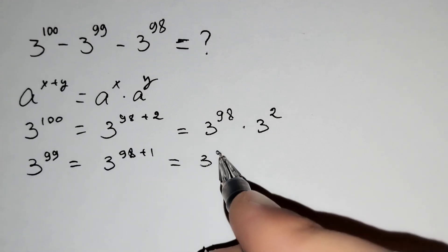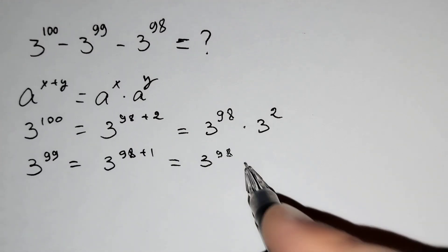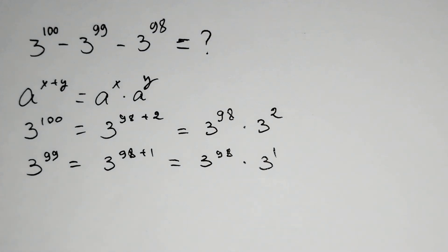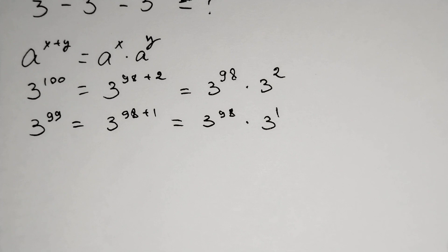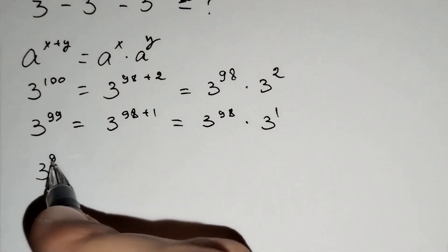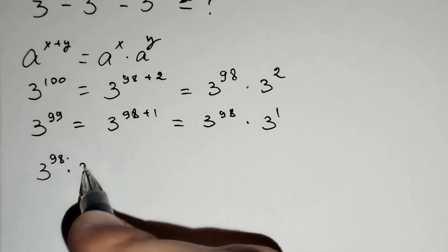And let's put it above: 3^98 * 3^2 - 3^98 * 3^1 - 3^98.